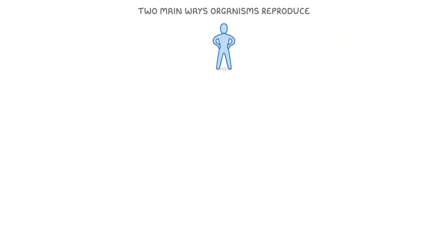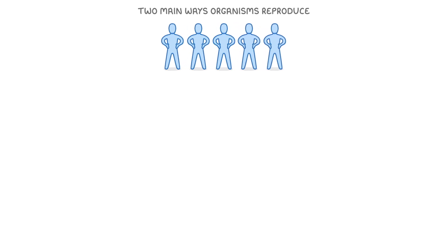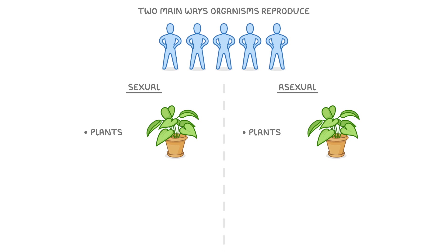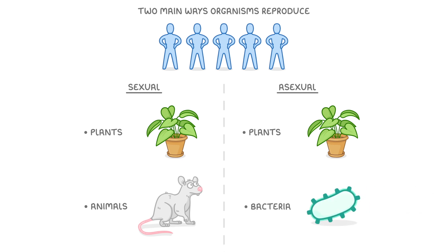In this video we are going to take a look at the two main ways that organisms can reproduce: sexual reproduction and asexual reproduction. Some organisms, like plants, can reproduce through either of these two routes, however most animals have to rely on sexual reproduction, and bacteria all reproduce asexually.